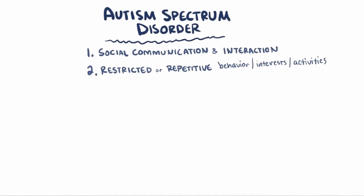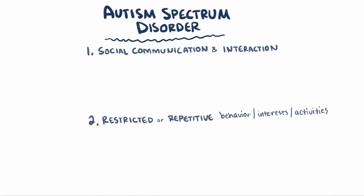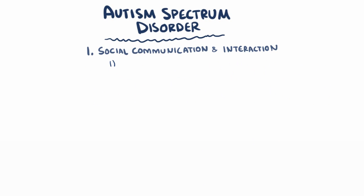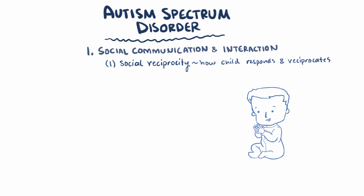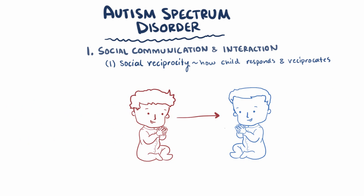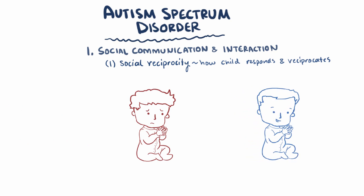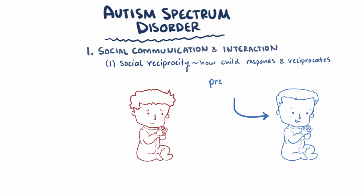For the social and communication area, there are four subcategories that clinicians look for deficits. The first is social reciprocity, which refers to how children respond or reciprocate in social interactions — how the behavior of one person influences the other, and vice versa. An example impairment in this area might be preferring to be alone and not taking a role in social games.